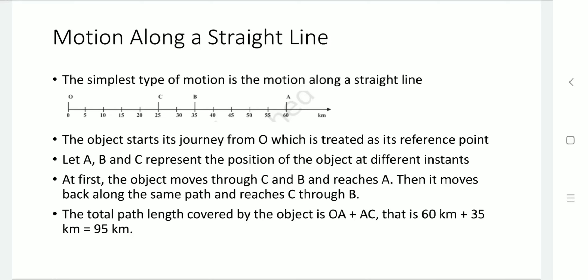Now, suppose the object moves from O to C, reaches its final point A, and then needs to come back to C. The path from O to A is 60 kilometers, and coming back from A to C is another 35 kilometers, so the total distance covered by the object is 95 kilometers.